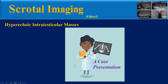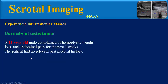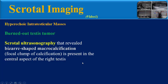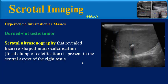Here is a teaching case presentation. A 22-year-old male complained of hemoptysis, weight loss, and abdominal pain for the past two weeks. The patient had no relevant past medical history. Chest X-ray showed bilateral multiple variable-size opacities suggestive of metastasis. Scrotal ultrasonography revealed bizarre-shaped macrocalcification in the central aspect of the right testis.